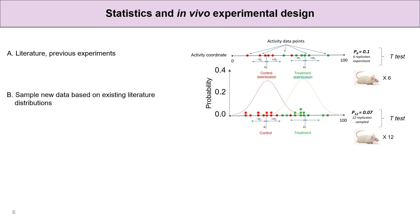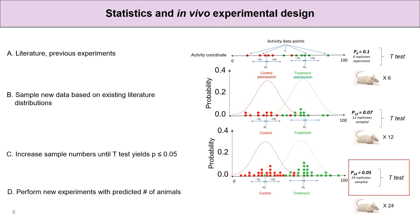If the difference is not significant, the statistician can run an in silico simulation sampling more points consistent with the assumed normal distributions of the experimental data. The number of sample points is increased until significance is achieved. The number of sample points at this stage is equal to the number of animals to use in the currently planned experiments.